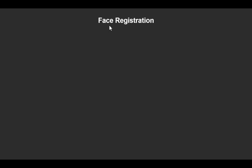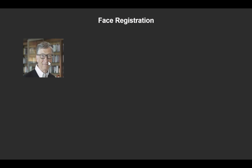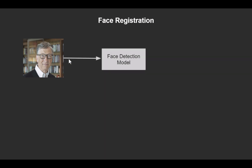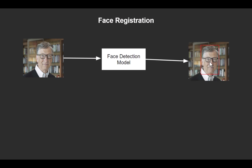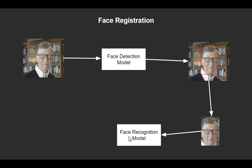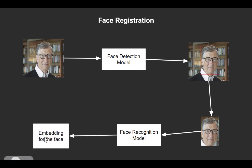Let's look at face registration. Consider we have a Bill Gates image and we want to register his face. We pass this image to a face detection model, which detects where the face is in the image and returns its location so we can draw a rectangle around it. After cropping that face, we pass it to our face recognition model, which returns an embedding — the numerical representation of that face.